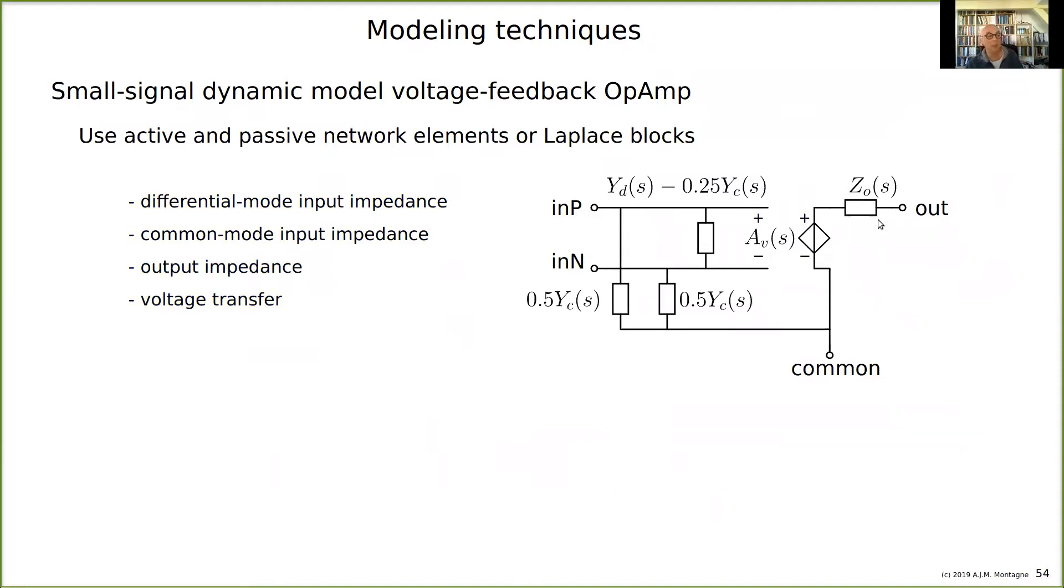If you have the input capacitance, the common mode input capacitance, you will short the two nodes and measure the capacitance to ground. Then this is half of the common mode input capacitance and this is half of the input capacitance. If you have the differential mode input capacitance, you measure the capacitance between the two nodes.